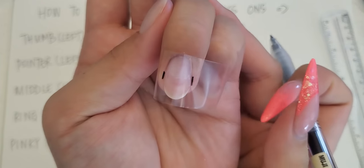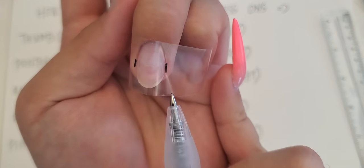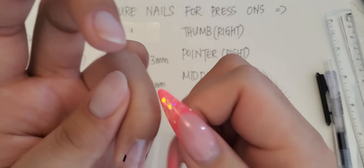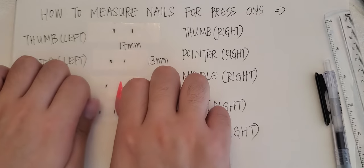You can see that? You're gonna mark, remember, mark at the widest part of your nail. I'm gonna take the piece of tape. Place it down.